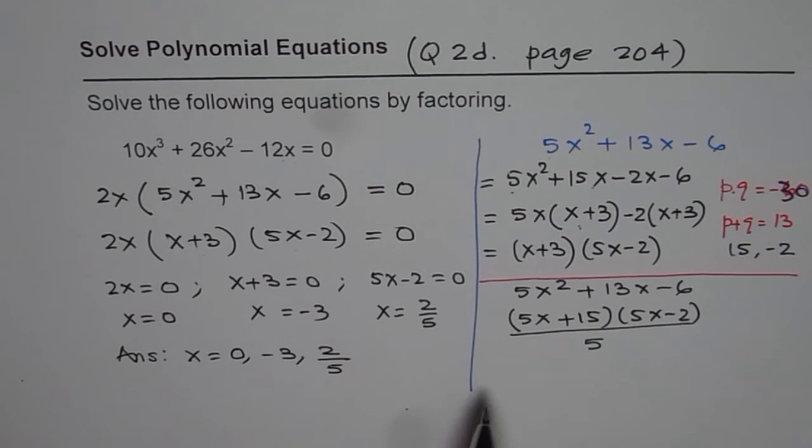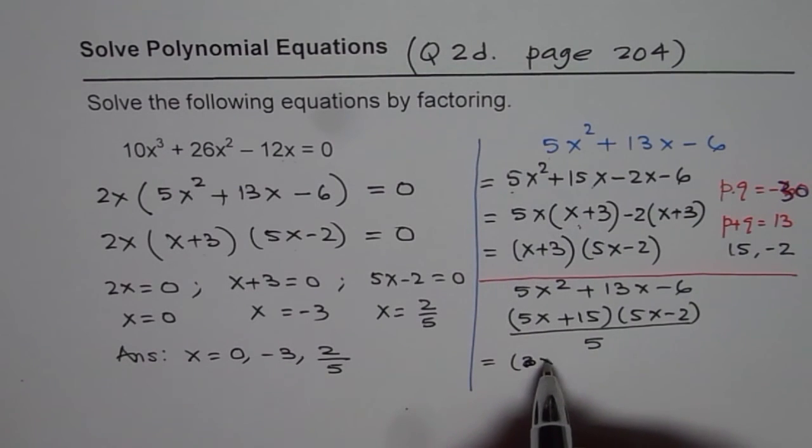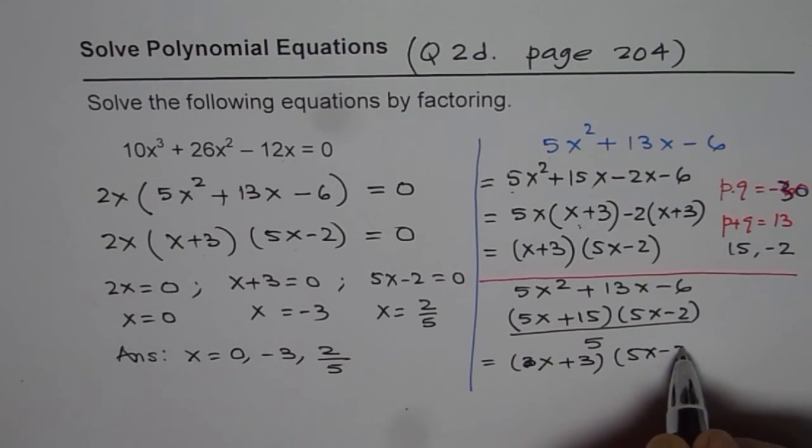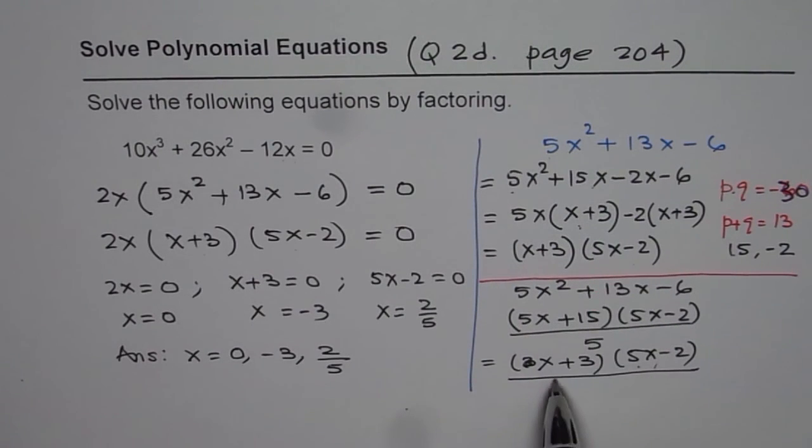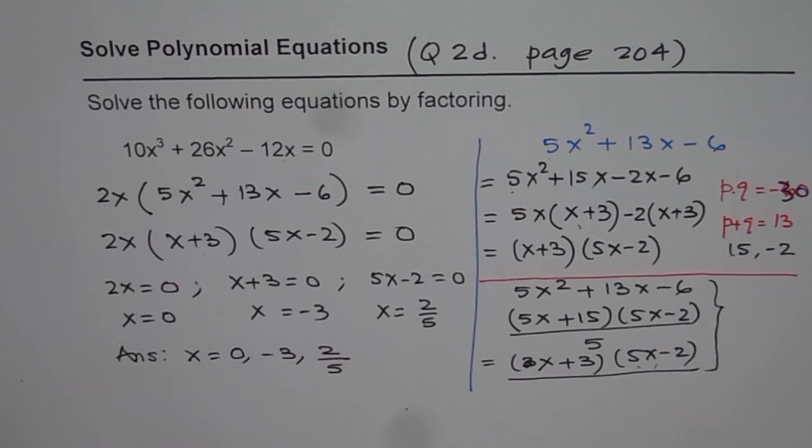I can simplify now. 5x plus 15 divided by 5 gives me, sorry, 5x divided by 5 is x. 15 divided by 5 is 3. And we have 5x minus 2. So, we get the same result. 5x minus 2 and x plus 3. So, at times, you can also adopt this factoring technique.